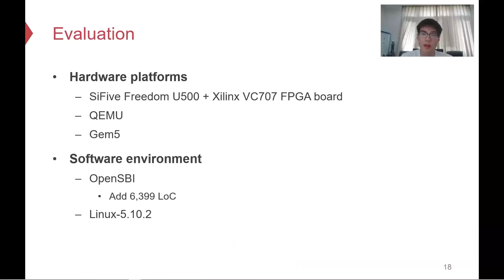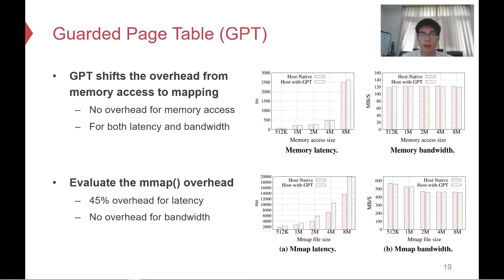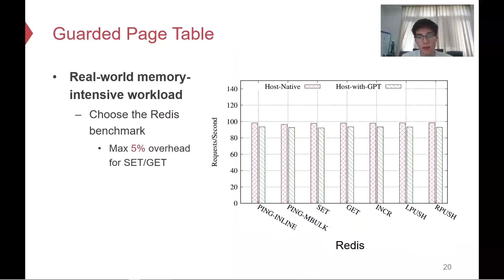We evaluate our scalable memory provisioning on a real FPGA board for RISC-V. We use OpenSBI as our secure monitor, extended to support enclave management and scalable memory provisioning, and Linux as our untrusted kernel. First, we evaluate the Guardian Page Table, which shifts the tracking overhead from memory access to memory mapping. We evaluate mapping and access overhead on a micro-benchmark. The results show it introduces at most 45% overhead for memory map latency but will not sacrifice the performance of memory access. For real-world applications, using a memory-intensive benchmark, the Guardian Page Table introduces only 5% overhead.